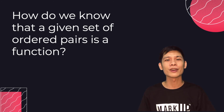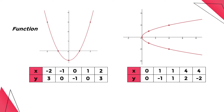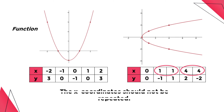How do we know that a given set of ordered pairs is a function? By analyzing the set of ordered pairs, we can see that the graph on the left, which is a function, does not have repeating X values. Thus, for a function, the X values or X coordinates for a set of ordered pairs should not be repeated. Since there are repeating X values for the table of values on the right, this set of ordered pairs does not represent a function.